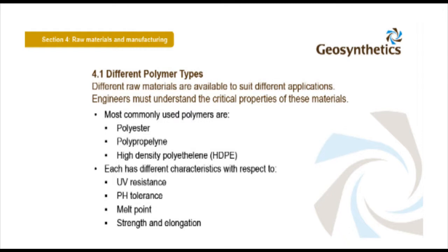For example, most geomembranes are made from high-density polyethylene, whilst geotextiles are either polyester or polypropylene. When using a geotextile and geomembrane in a containment application, an engineer needs to ensure these products are compatible with the chemistry of the waste material.